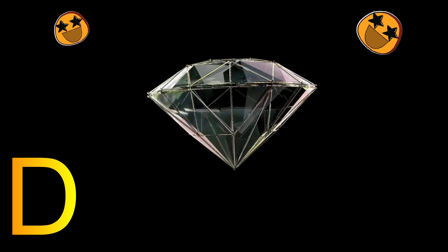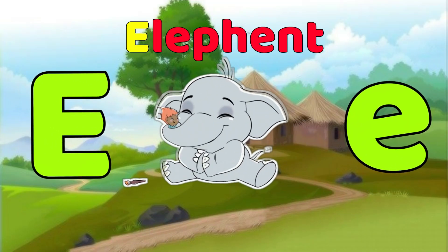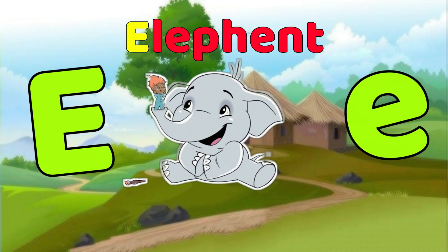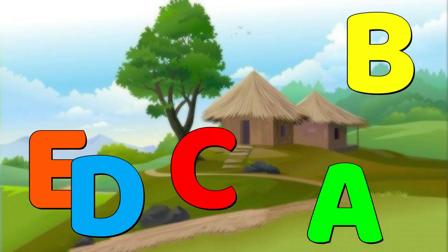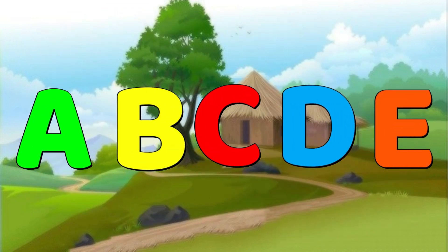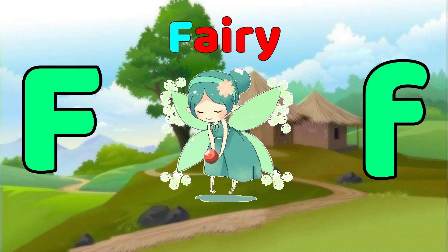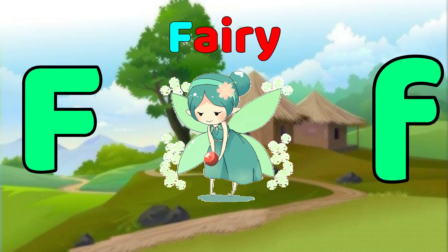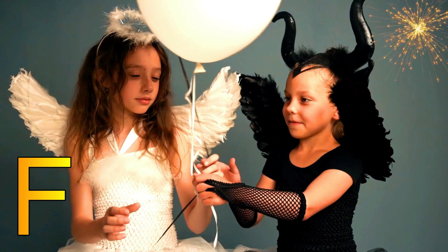E is for Elephant. E, Elephant, E, Elephant, E. F is for Fairy. F, Fairy, F, Fairy, F.